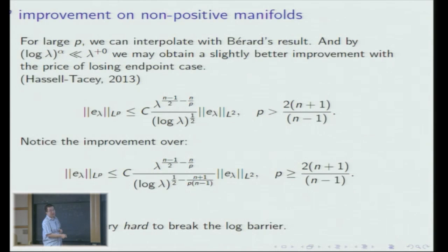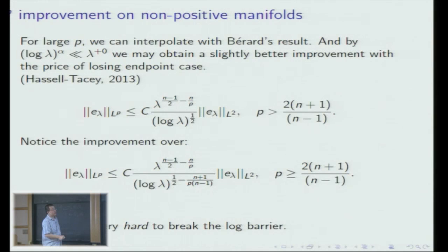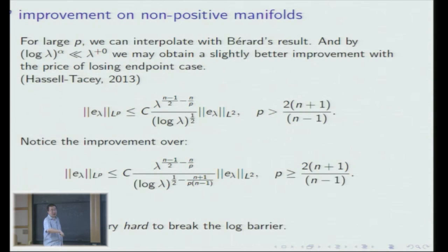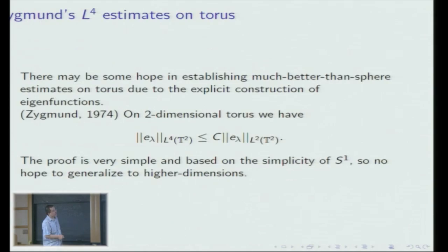In general this improvement is going to be something like a log factor, roughly speaking, because the geodesics on manifolds with negative curvature diverge from each other at a rate comparable to an exponential function. Some mathematicians believe you can actually have a power improvement, just like on torus. So far we have no idea how to break the log barrier on a generic manifold with negative curvature — everything is based more or less on the Bérard argument. It seems very hard, even impossible, to break this log barrier.